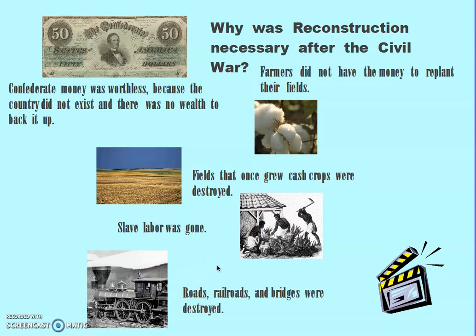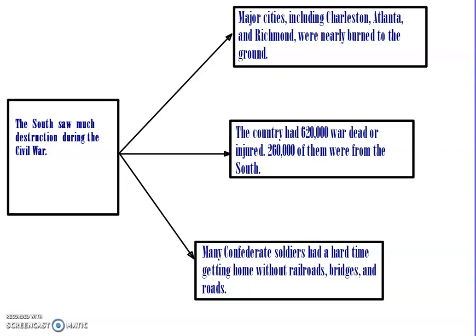Roads, railroads, and bridges were also destroyed — there were more in the North, but they were not as destroyed as in the South. The South saw much destruction during the Civil War. Major cities including Charleston, Atlanta, and Richmond were nearly burned to the ground. The country had 620,000 dead and injured, with 260,000 from the South. Many Confederate soldiers had a hard time getting home without railroads, bridges, and roads. The North had more dead and injured overall, but it was a loss for everybody.